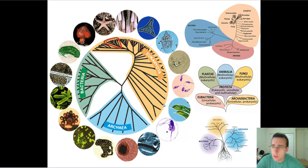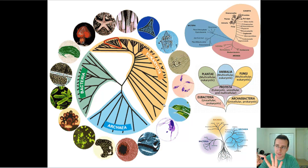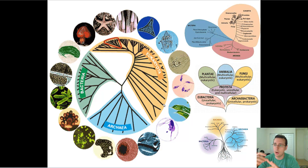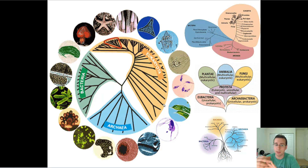You also have the eukaryotic things that have internal organelles, and that is separated into four kingdoms. The Protista kingdom, which are unicellular organisms. The Fungi kingdom, which are multicellular eukaryotic organisms that are heterotrophs and must digest their food outside their bodies and then ingest the nutrients. There are animals, which are also multicellular, also heterotrophs, but they ingest their food and digest inside their own bodies. And then you have the Plantae, which are the plants, which are also multicellular, but they are autotrophic and make their own food.